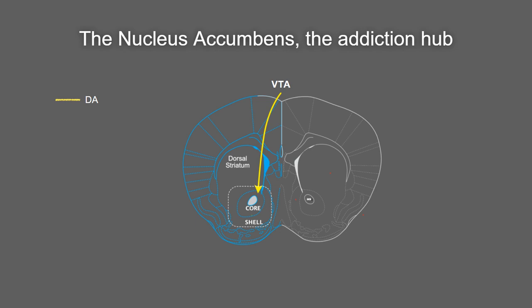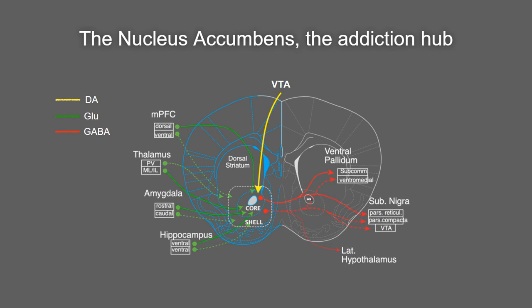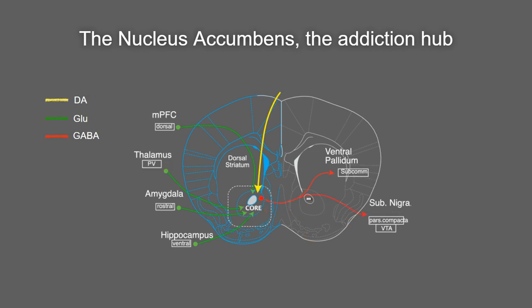In addition to dopaminergic projections from the ventral tegmental area, the main feature of this brain region is that it receives massive glutamatergic input from a number of brain regions — the prefrontal cortex, the thalamus, the amygdala, and the hippocampus. All the data I'm going to show today have been collected from the core subregion. The key point I want to drive home is that these brain regions send extremely different kinds of information to the nucleus accumbens: the prefrontal cortex with executive function, thalamus with sensory, amygdala with emotional, and hippocampus with contextual information. How the accumbens computes and integrates this sometimes contradictory information is something we'll see in a couple of minutes.